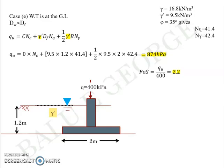The key takeaway from this problem is to observe how the factor of safety varies with water table fluctuation. Factor of safety values were: 3.87, 3.09, 3.59, 2.56, and 2.2 for Cases A through E. The minimum value of 2.2 occurs when the water table is at ground level. As the water table rises, the factor of safety decreases — meaning the foundation becomes more prone to shear failure.